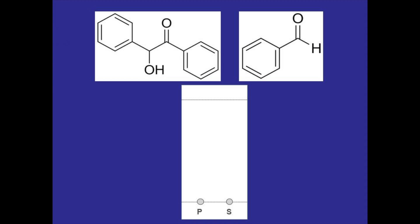So we'll make two spots on the TLC plate, one from the product reaction mixture from the conical vial and the other from a benzoin standard just to make sure that we are forming benzoin and not some other compound.